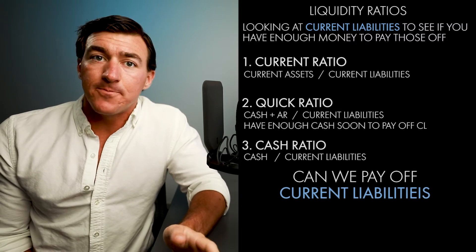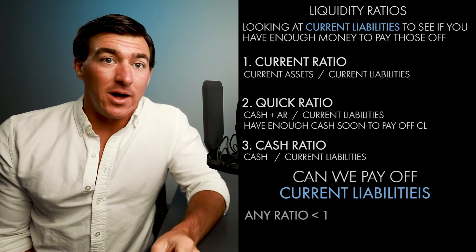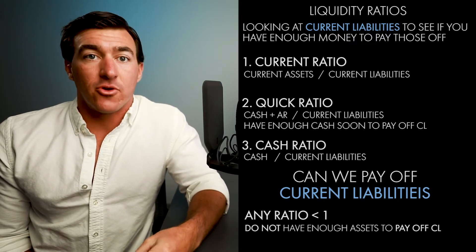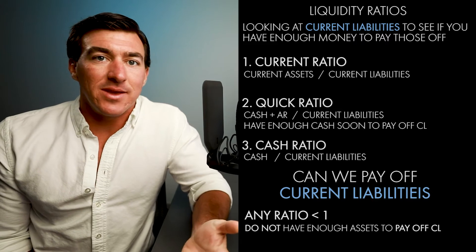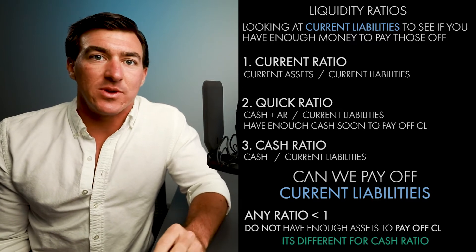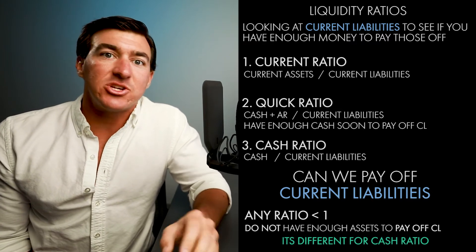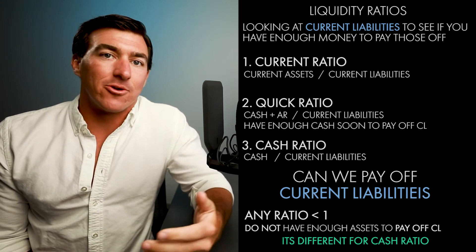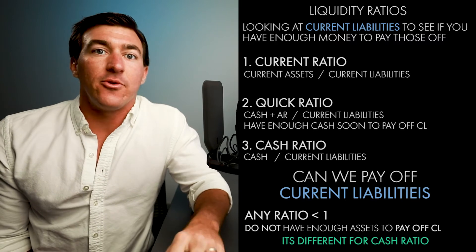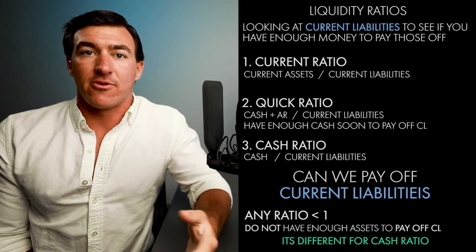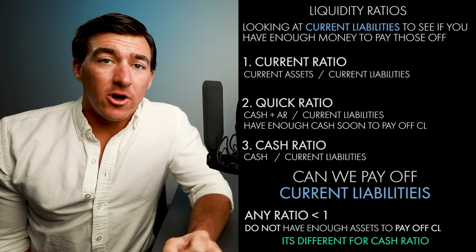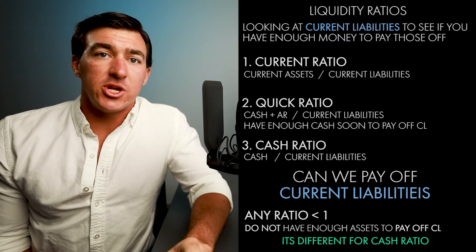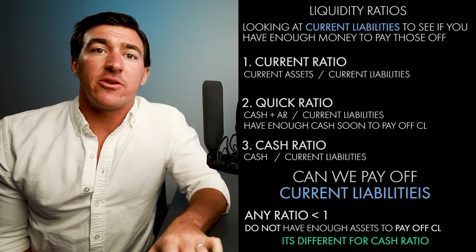In theory, any one of those ratios that's less than one means you do not have enough assets to pay off your current liabilities. That's not such a big deal for the cash ratio, because if you don't have enough cash today to pay off current liabilities, you're expecting to get money through accounts receivables, you have inventory you expect to sell, and there are other current assets you can leverage. All three ratios help you understand the relationship between your current asset accounts and current liabilities.